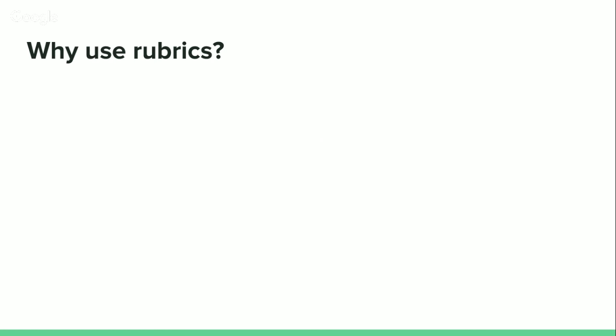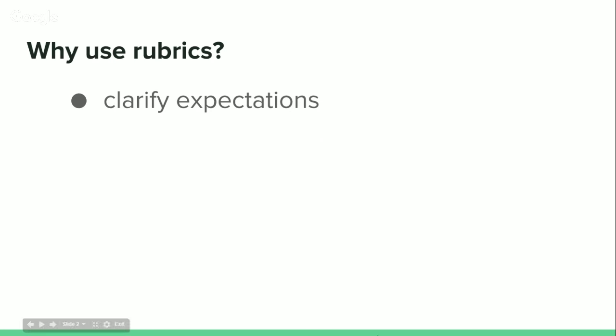The first question is: why use rubrics? One reason is that it makes clear to students what your expectations are. Students often don't know what they should be doing after working on a discussion or writing a paper. By putting together a clear rubric, we're telling students exactly what we're looking for, what we're going to be evaluating, and what they need to do to get full credit for whatever the assignment is.